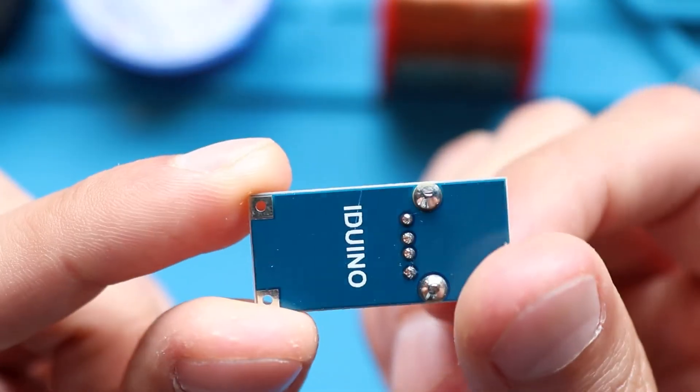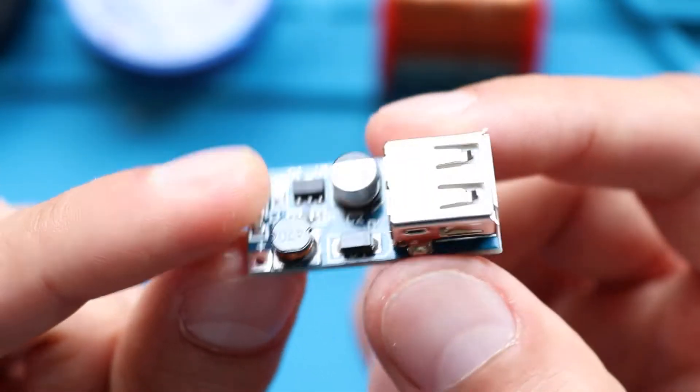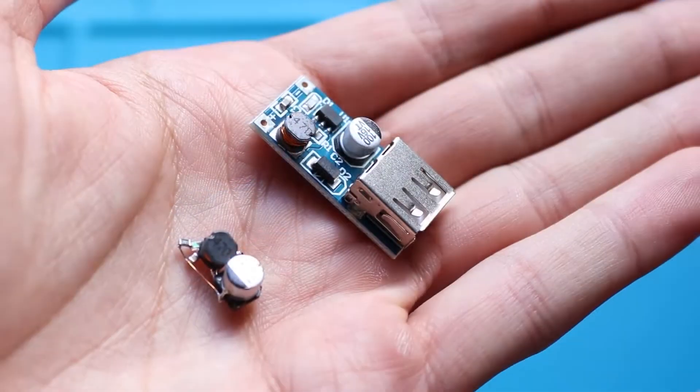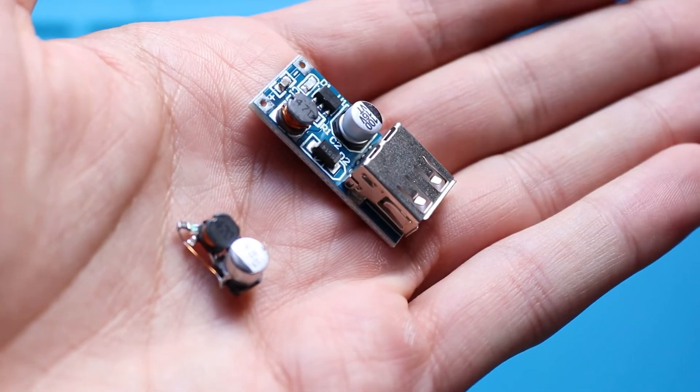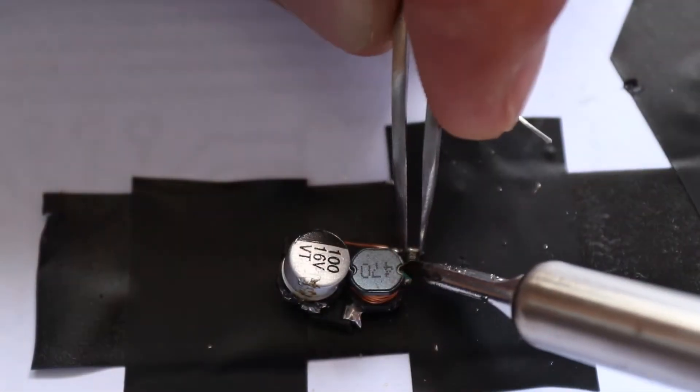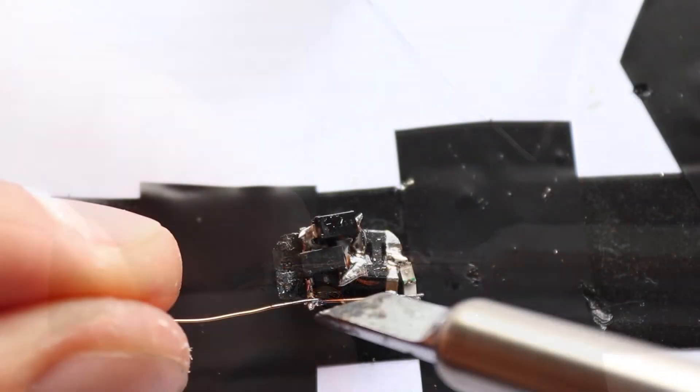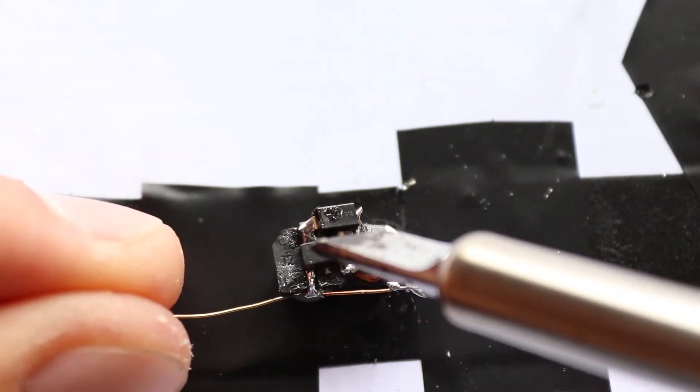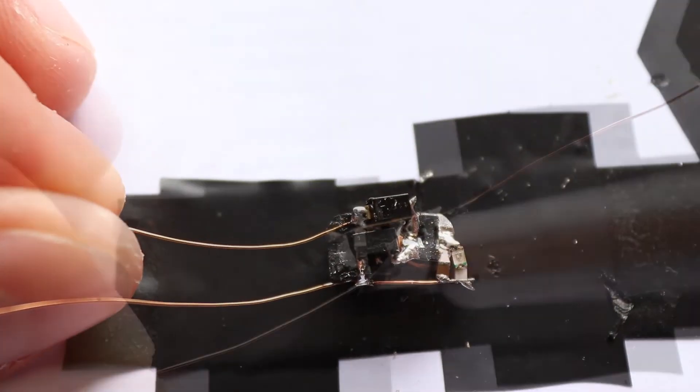Most electronic devices nowadays have printed circuit boards. But what if I say that you can make your devices smaller and cheaper using point-to-point construction method? It's when you connect everything together with wires or solder components to each other directly. Let's look together how to use this tool wisely and what are the limitations.